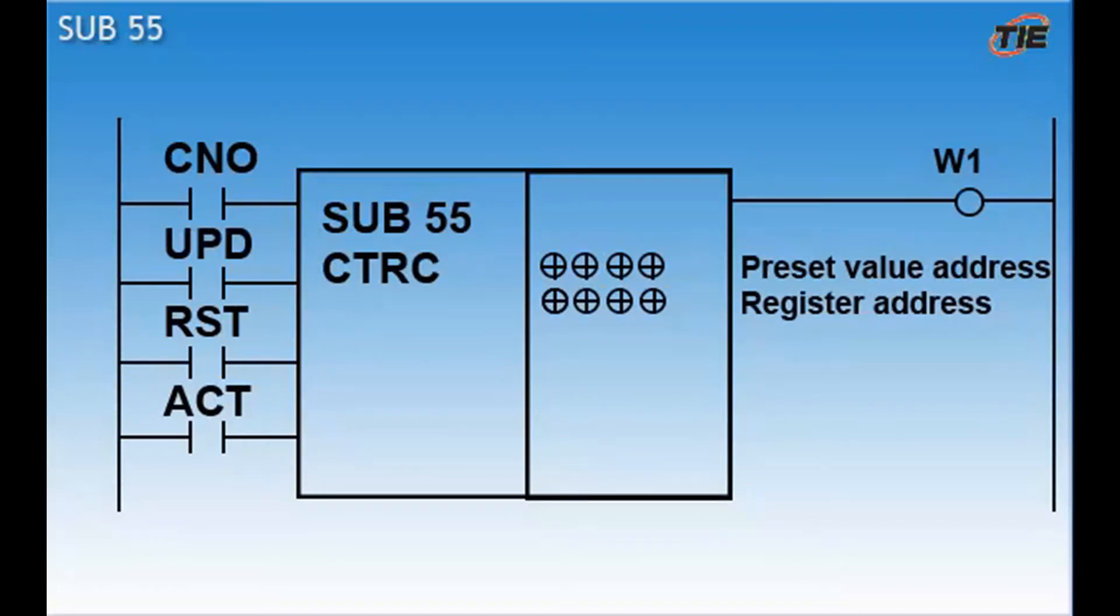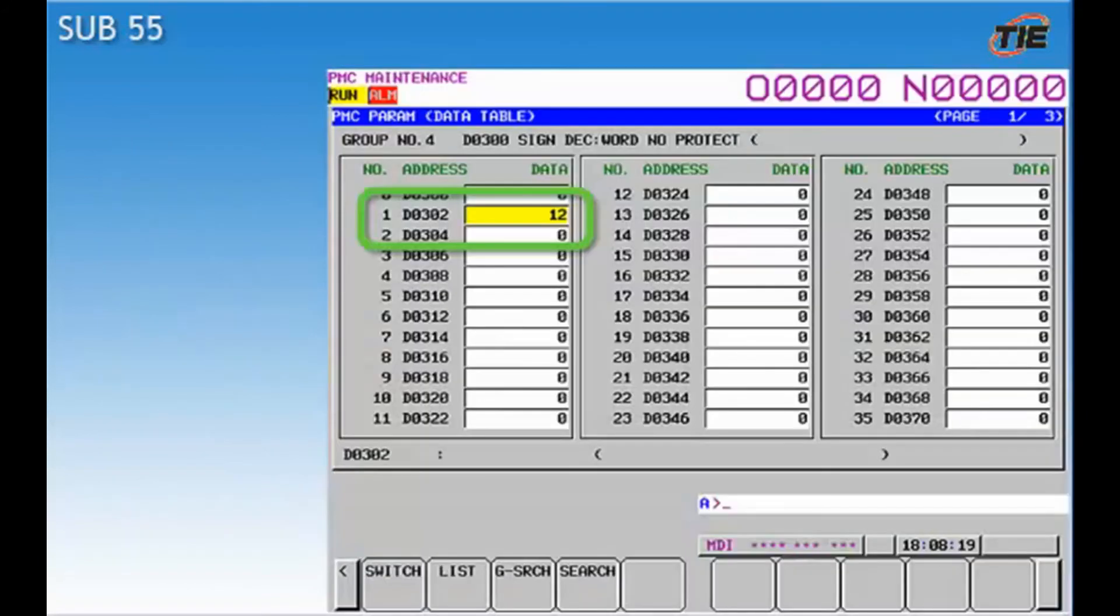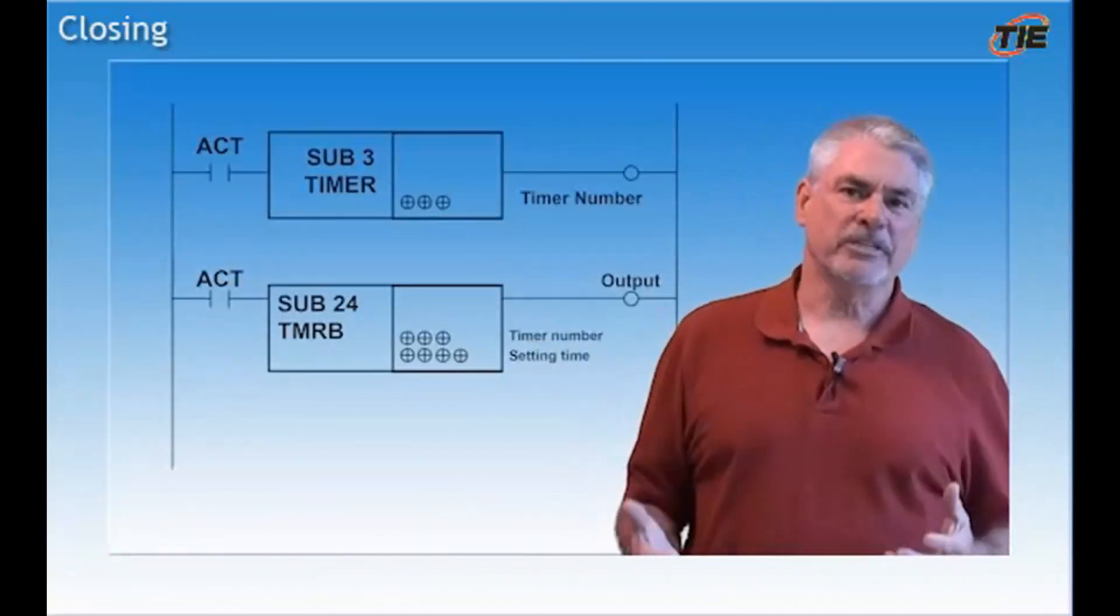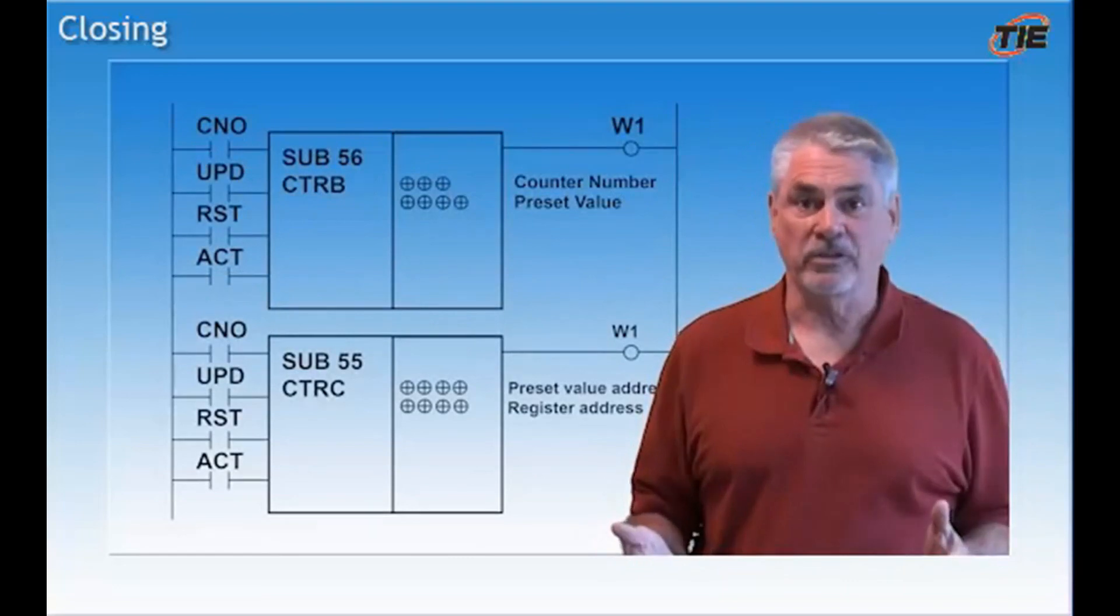The last counter we're going to talk about today is the CTRC, the sub 55. This is similar to the TMRC timer. The preset value for this counter is assigned to an address instead of having a constant value. The value in this address is often set in the data tables. For instance, by setting a value of 12 in data address D302, the counter is set to 12. All of the settings are the same as we discussed previously. This is a simple explanation of some of the timers and counters used on a FANUC control.